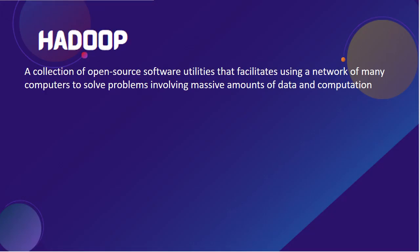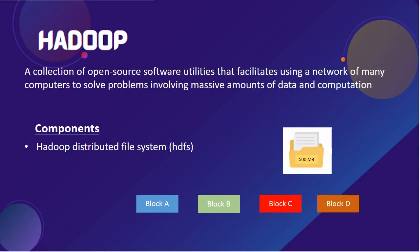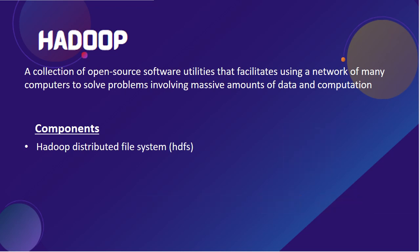Hadoop is a collection of open-source software utilities that facilitates using a network of many computers to solve problems involving massive amounts of data and computation. Hadoop has two main components. The first is Hadoop Distributed File System or HDFS. In HDFS, data is distributed across many computers and stored in blocks. For instance, if you have 500 megabytes of data to be stored, HDFS splits the data into multiple blocks that are then stored on several data nodes.